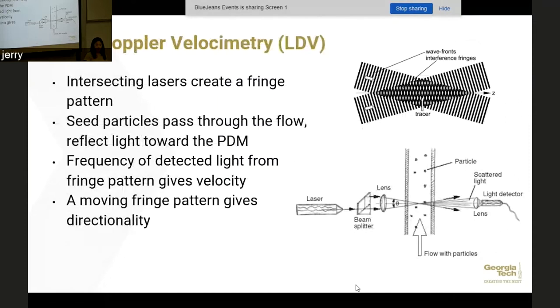All right, so the second method is laser doppler velocimetry or LDV. In contrast to the previous method, in this method you're not actually putting a physical object in your flow. You're actually just shining two lasers into the flow and they intersect at a probe volume inside the flow. These lasers create a fringe pattern that is of lower frequency than the original beams. You would then seed your flow with particles, usually in our case like aluminum oxide or silica oxide, just to track the flow and show where it's actually going. As your seed particles pass through the flow they reflect light toward the photo detector module.